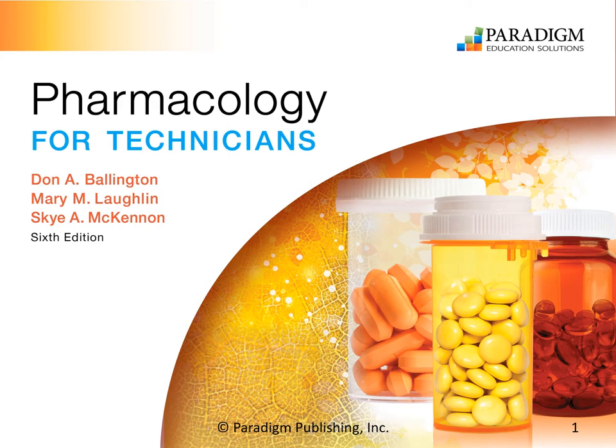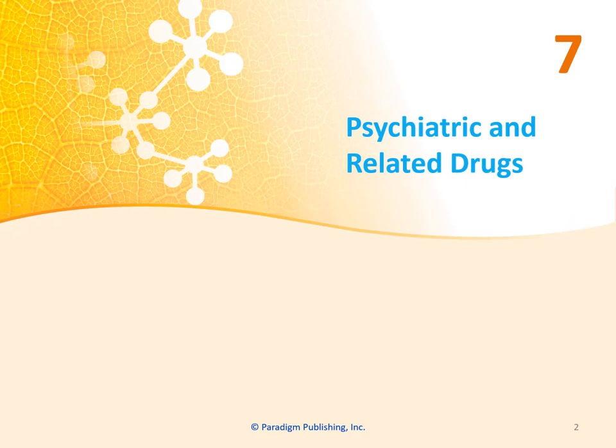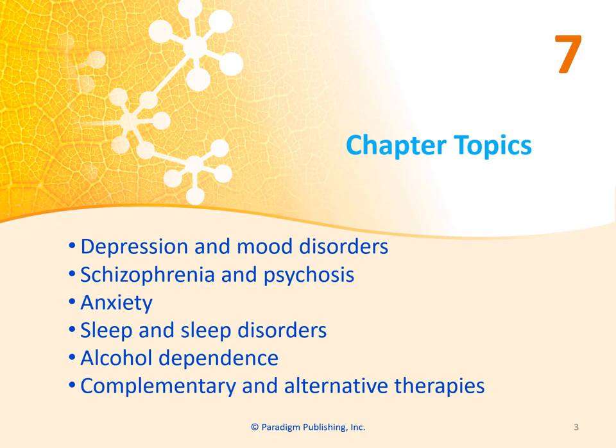Hello class, today we're going to talk about chapter 7 in your textbook, Psychiatric and Related Drugs. Our chapter topics include depression and mood disorders, schizophrenia and psychosis, anxiety, sleep and sleep disorders, alcohol dependence, and complementary and alternative therapies.